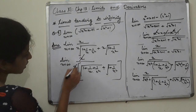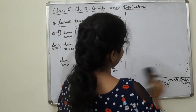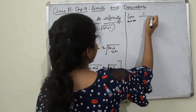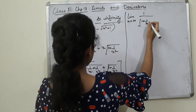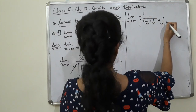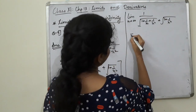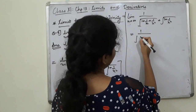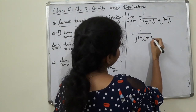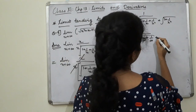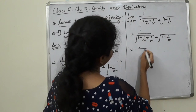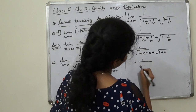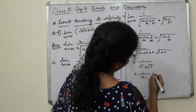Now we have limit x tending to infinity of 1 divided by root of 1 plus 1/x plus 1/x squared plus root of 1 plus 1/x squared. We substitute x → ∞, so 1/∞ = 0 and 1/∞² = 0. This gives 1 divided by root of 1 plus 0 plus 0, plus root of 1 plus 0, which equals 1 divided by 1 plus 1.